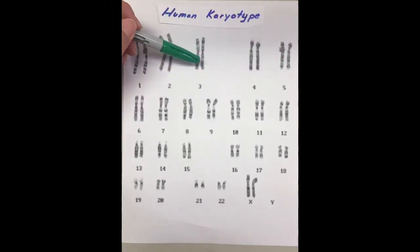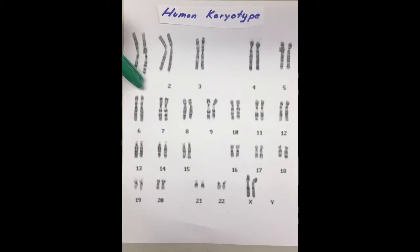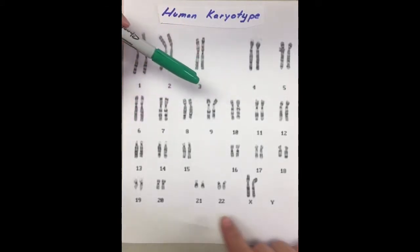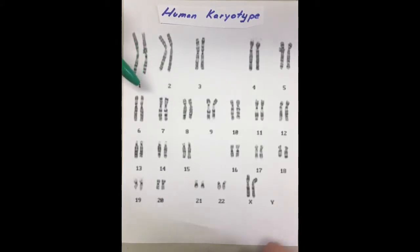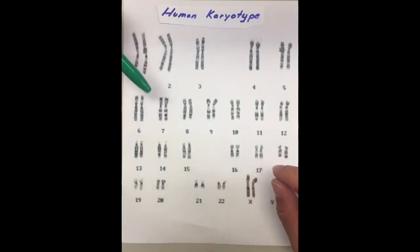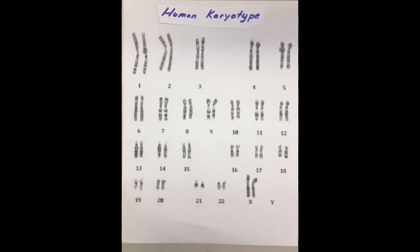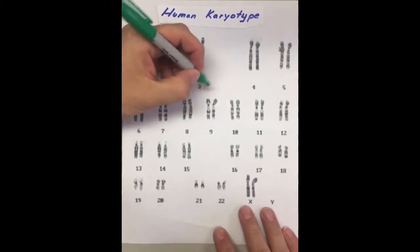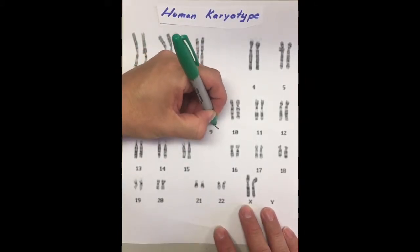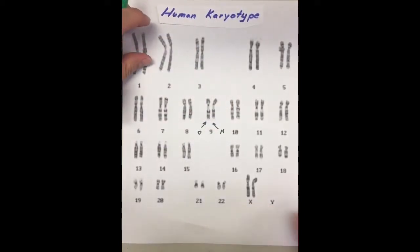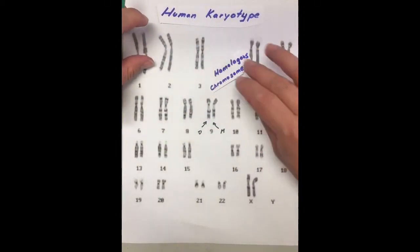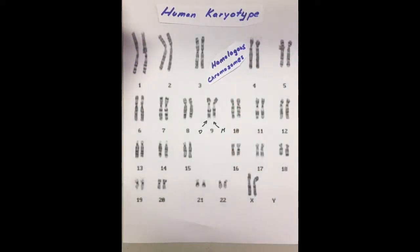In the karyotype, chromosomes are paired up in a specific way — same size and same shape. We have 23 pairs of chromosomes, all the way from pair one down to pair 23, because we inherit 23 from mom and 23 from dad. When you organize them, you can see that mom gave you one chromosome and dad gave you one chromosome — that's why they're in pairs. Chromosomes that are the same size and same shape are called homologous chromosomes.